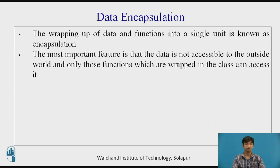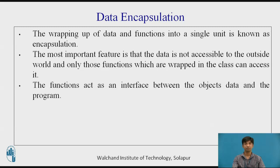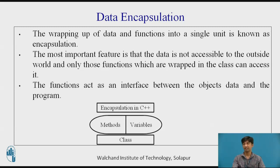Encapsulation also leads to data abstraction or hiding. Using encapsulation hides the data — in the above example, the data of any section like sales, finance, or accounts is hidden from any other section. The functions of the class act as an interface between the object's data and the program. In C++, methods and variables are packed under a single name called a class unit.